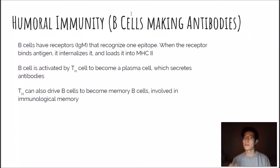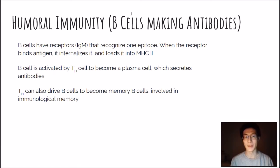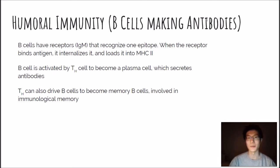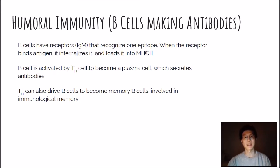The next type of adaptive immunity is humoral immunity, which involves B cells making antibodies as well as differentiating into memory B cells. B cells have IgM receptors that recognize one specific epitope — for example, an antigen on some kind of virus.